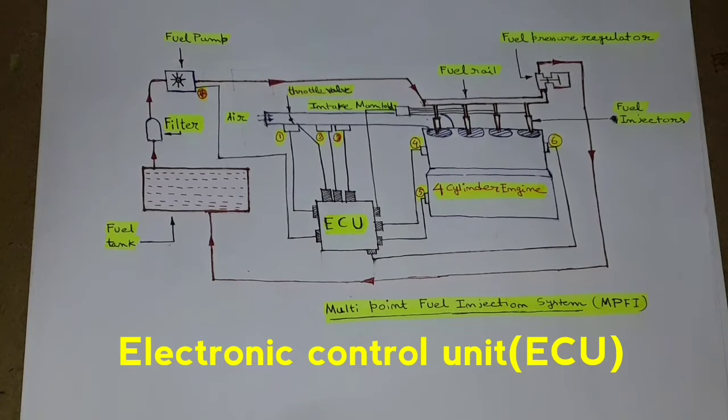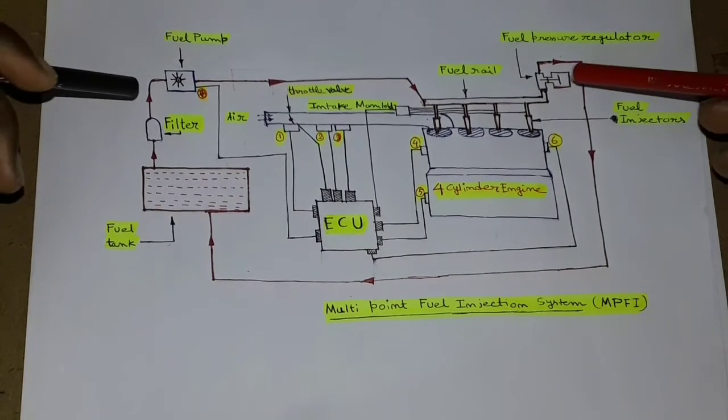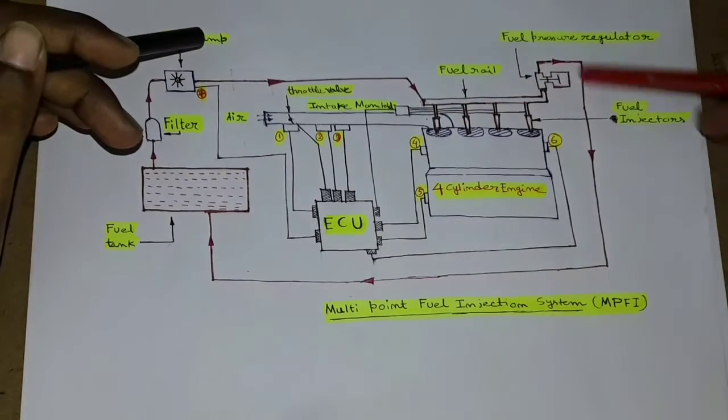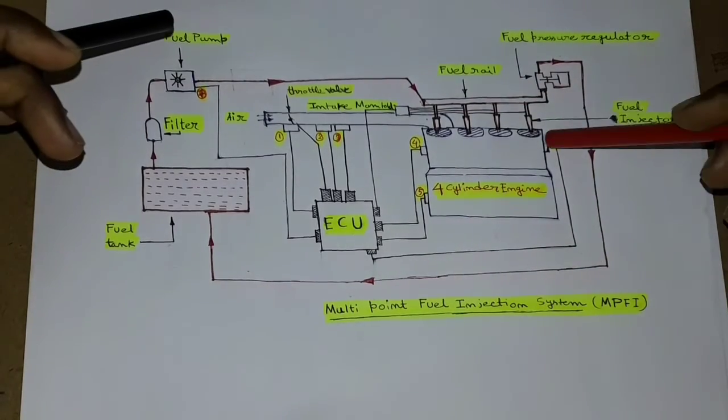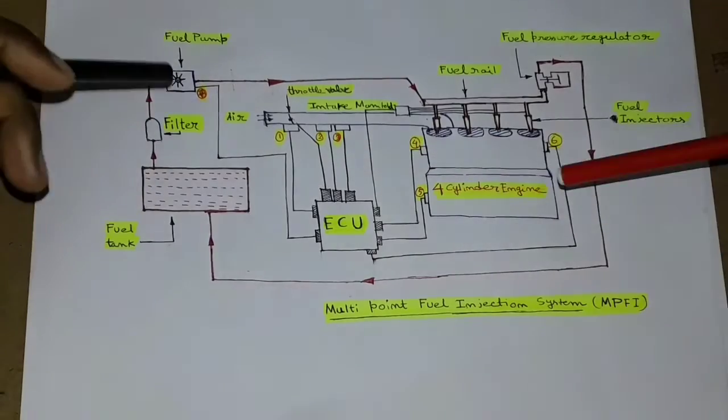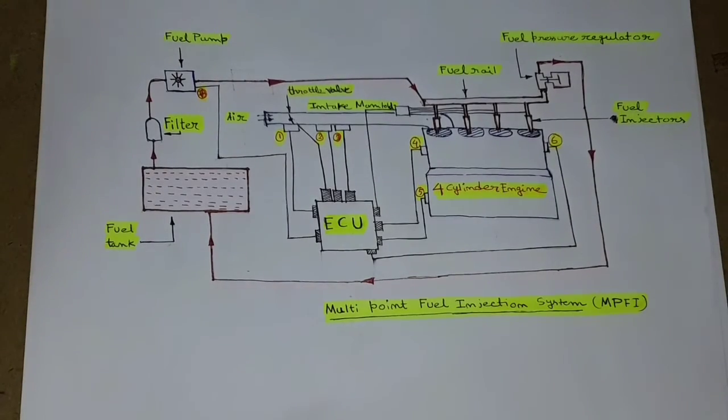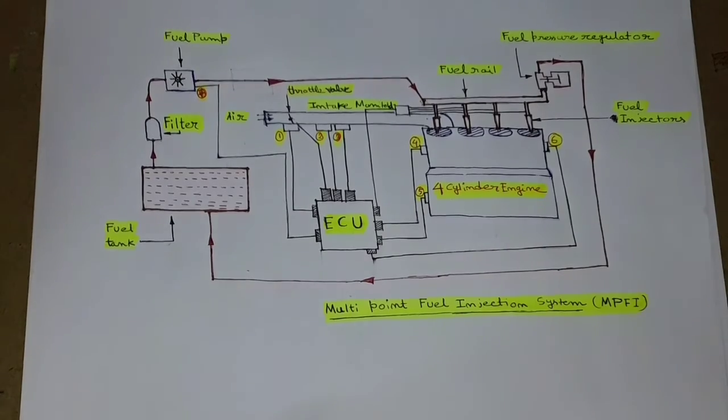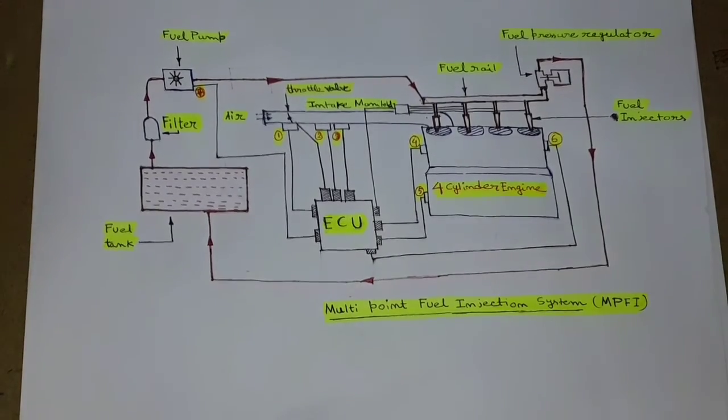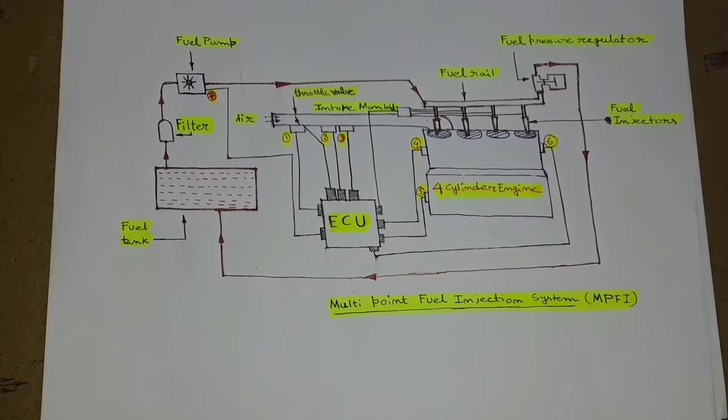Now the fuel line is shown in red color, and the black lines over here are basically the connections between ECU and different sensors and actuators. Now let us see how does it work.